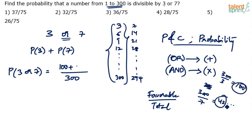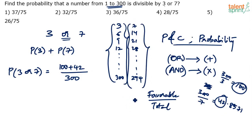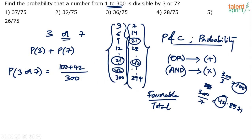However, you should also realize there could be common values between multiples of 3 and 7. For example, 21 is a multiple of 3 and also a multiple of 7. 42 is a multiple of 3 and also a multiple of 7. So you have to subtract all these common multiples because they've been counted twice — 21 has been counted in the 100 and also in the 42. Similarly, 210 is a multiple of both 3 and 7, counted in both the 100 and the 42.